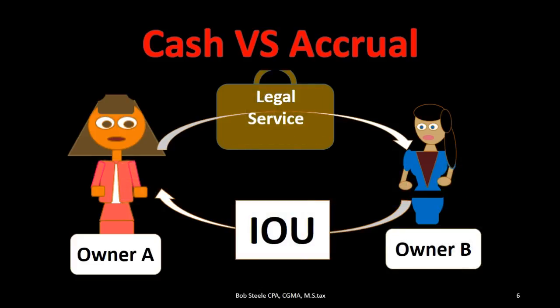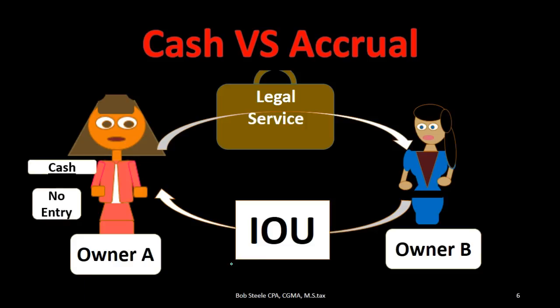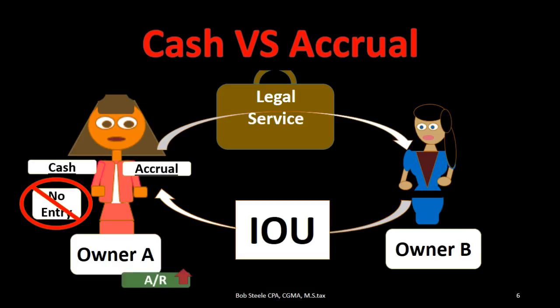We can think of another transaction: company A provided the legal services and billed the client, and owner B consumed the legal services but hasn't yet paid — they gave an IOU. What happens in that case? Under a cash method, owner A makes no entry. Why? No cash has been received. Under an accrual method, we say we have an asset — accounts receivable, an IOU from the client — and we record the income. Why? Because the actual destination has been pinpointed: we earned the revenue at that point in time, and we do have an asset — an IOU we expect to be paid in the future.